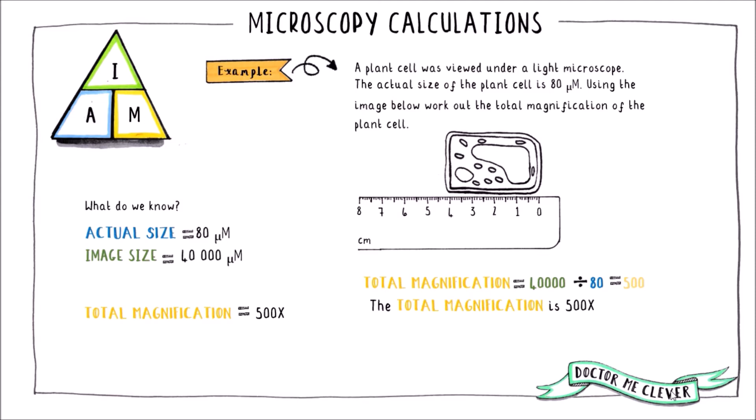If you are given a question that asks you to work out the actual size of a specimen and all you are given in the question is the total magnification along with the image, you will need to measure the image to get the image size and then rearrange the IAM equation so that actual size equals image size divided by total magnification and then plug your numbers in.